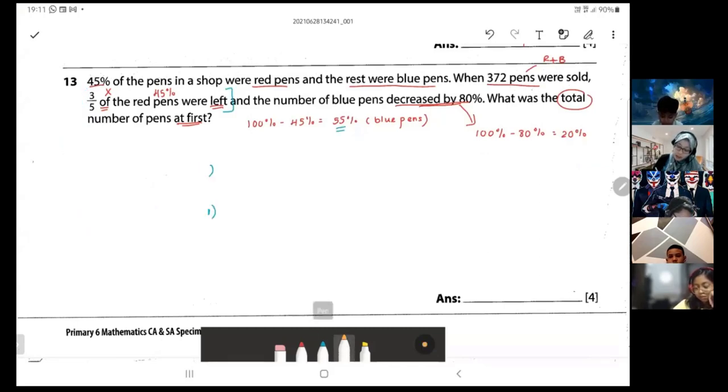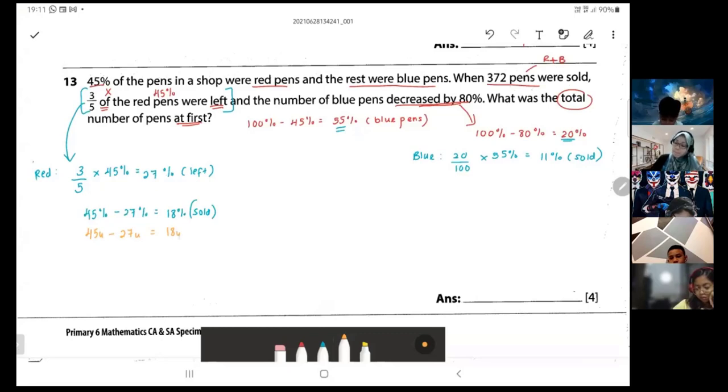We can represent the percentage as units. So it's 45 units minus 27 units equals to 18 units. Over here, this one is 55 percent minus 11 percent equals to 44 percent.